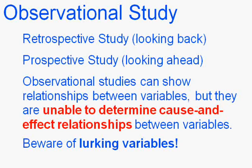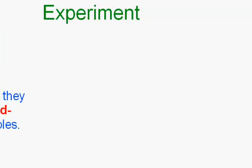Here's an example: one might look at data from a bunch of fires and see that when more firefighters arrived at the scene, the cost of the damage went up. One might conclude that the firefighters are causing the damage, so we should send fewer firefighters. But this is an error, because the lurking variable is simply the size of the fire. A larger fire means more firefighters arrive and also more damage occurs.